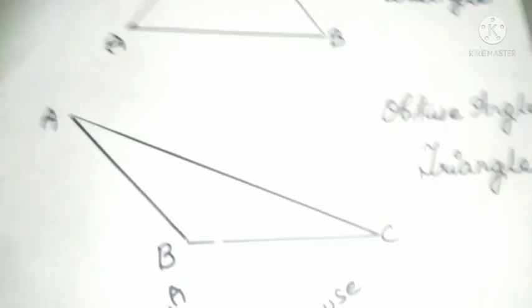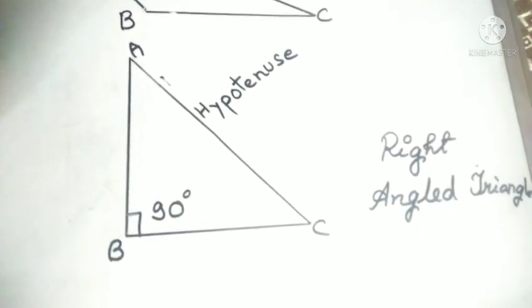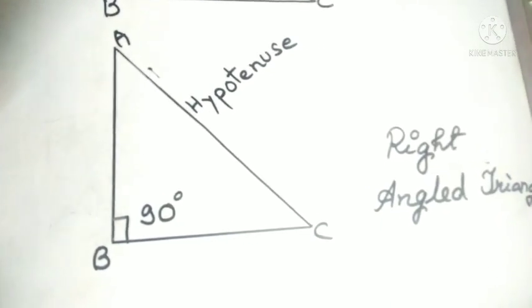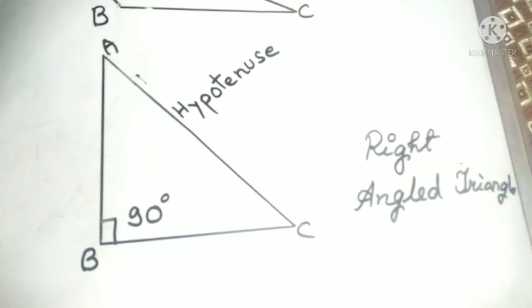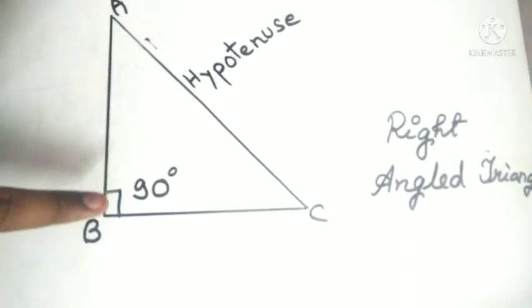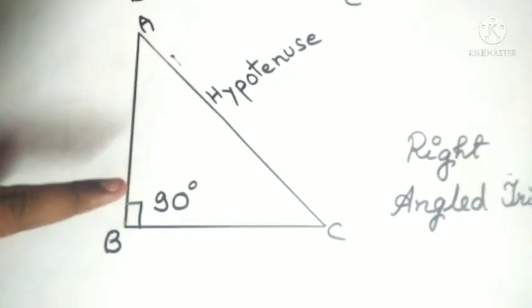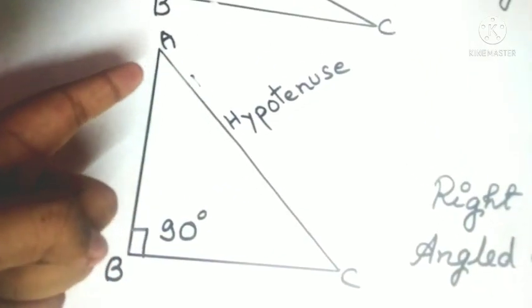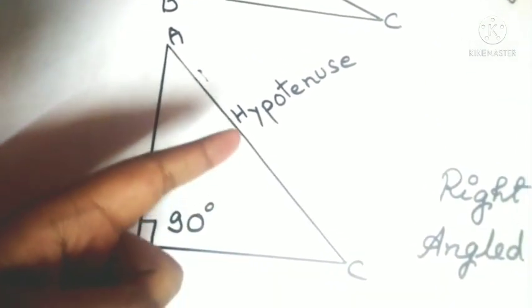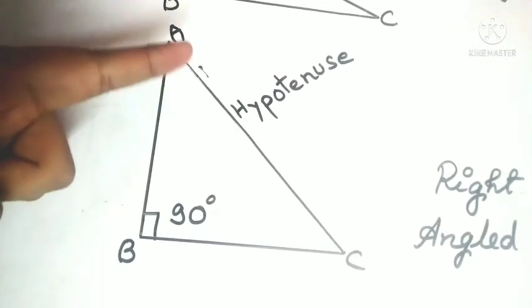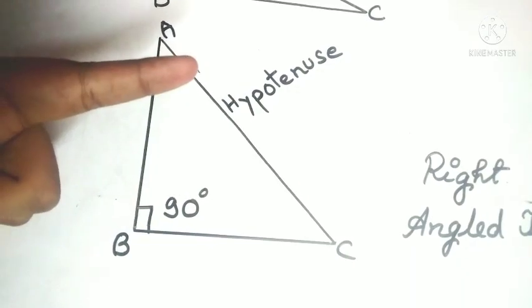Now we are going to learn what is a right angled triangle. A triangle which has one angle equal to 90 degrees is known as a right angled triangle. In this triangle, only one angle is 90 degrees, so it is a right angled triangle. The side opposite to the right angle is known as the hypotenuse.